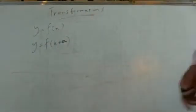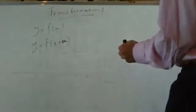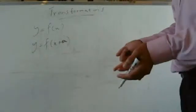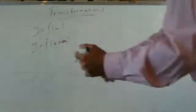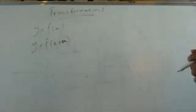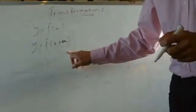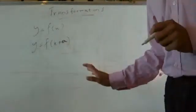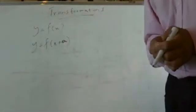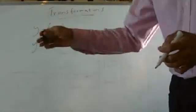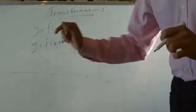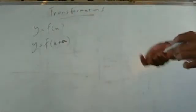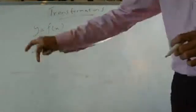That means whatever the graph which was originally there is going to move to the left a number of units. So if it was plus 2, all the x-coordinates are going to move 2 units back. If it was plus 4, all the x-coordinates are going to move 4 units back. So whatever the number a is, it's going to move a units to the left.